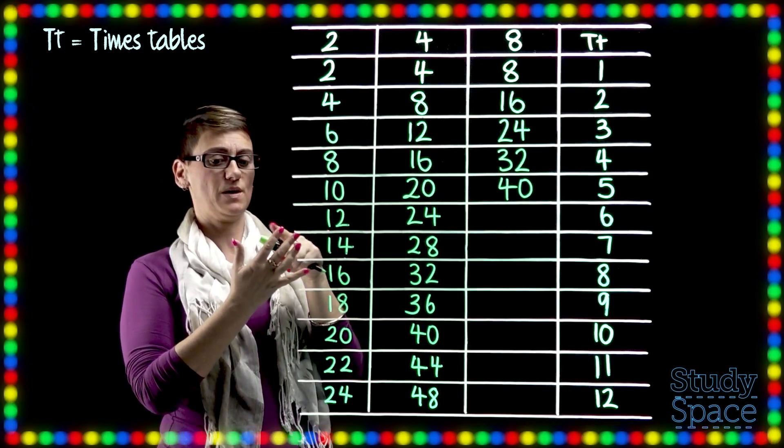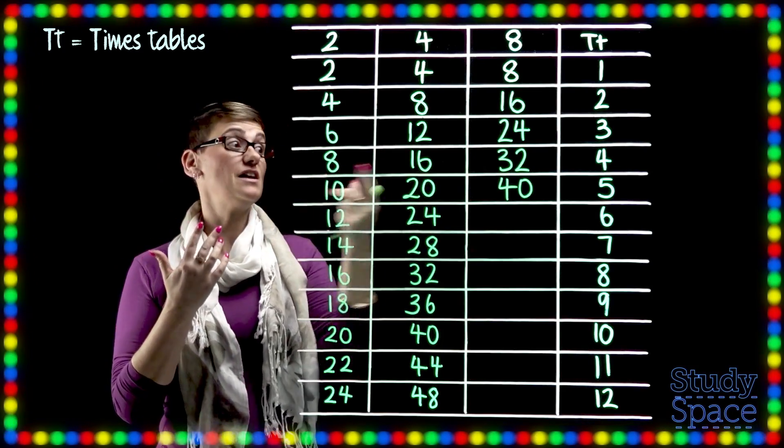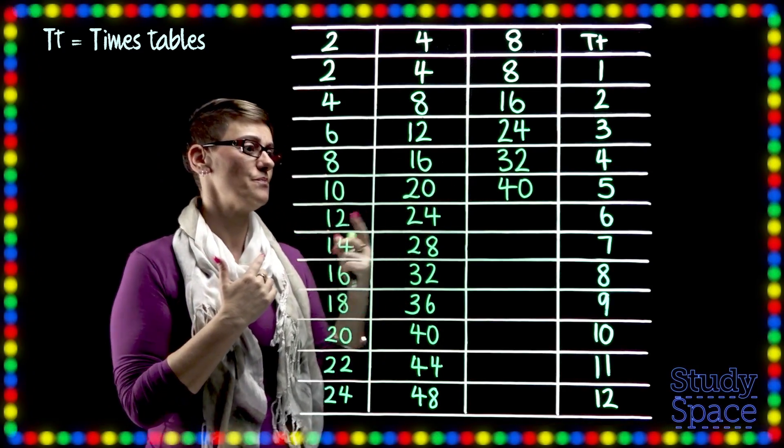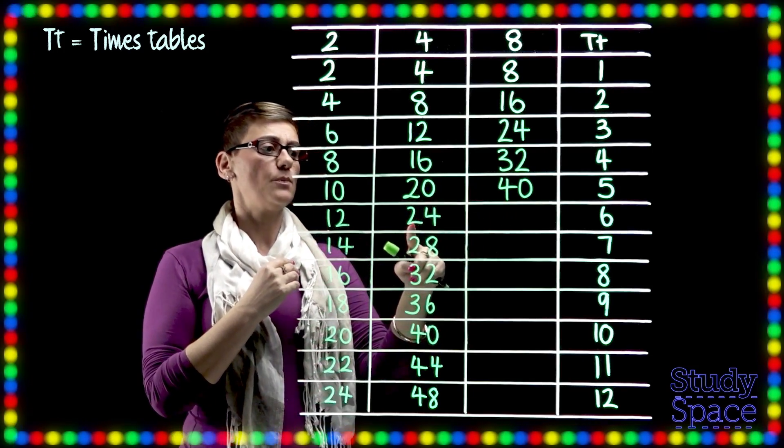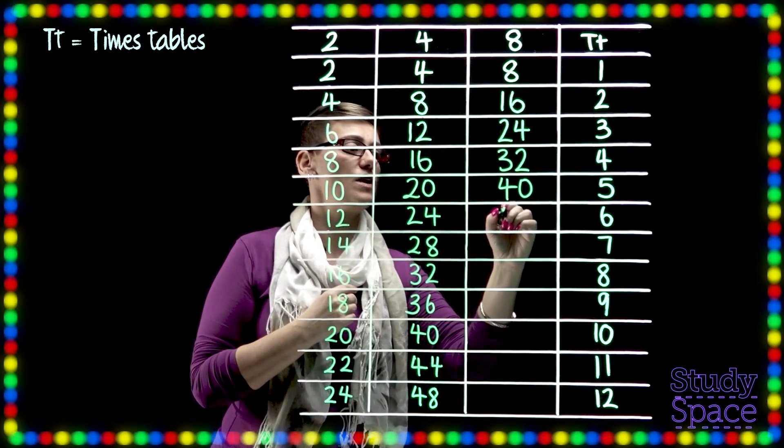If you know your 5's times tables you can check that. So 5, 10, 15, 20, 25, 30, 35, 40. So we're on the right track boys and girls.